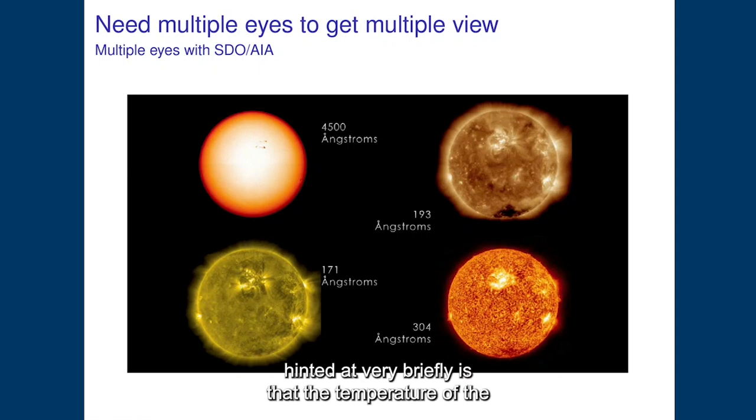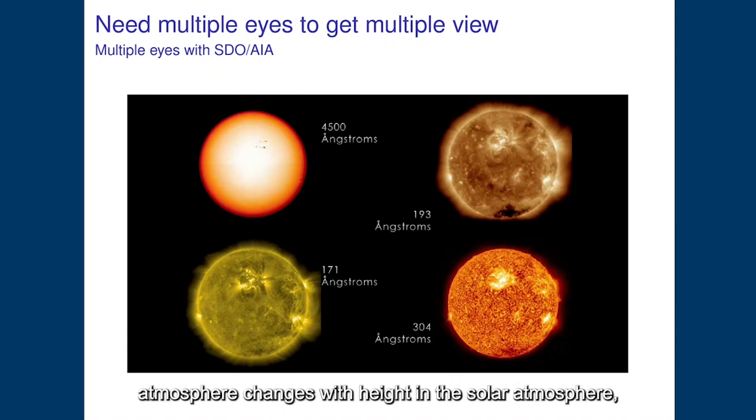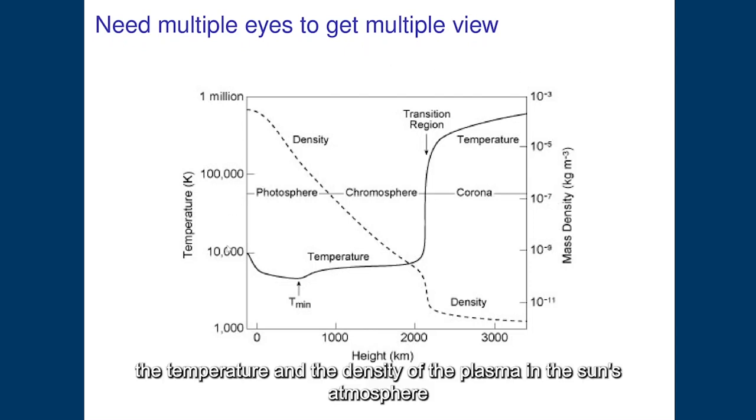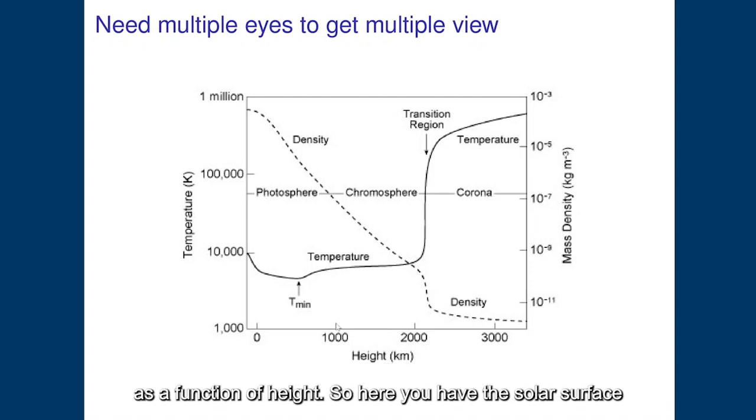So one crucial point that I've already hinted at very briefly is that the temperature of the atmosphere changes with height in the solar atmosphere. And this is summarized by this simplistic view of the temperature and the density of the plasma in the solar atmosphere as a function of height.